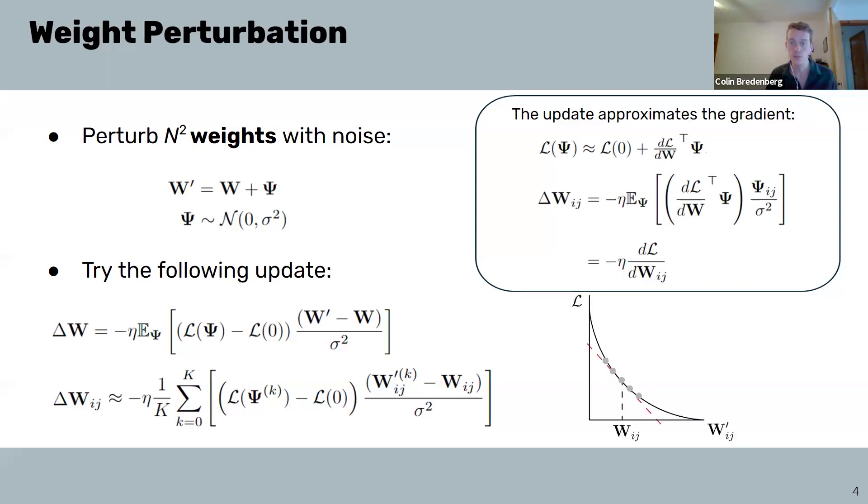Graphically, this parameter update corresponds to the following. We're adding noise to our parameter about the point WIJ, which produces many different losses, these individual dots here. As we can see, by estimating the correlation between the changes in our loss and the changes in our parameter WIJ, we can get an estimate of the slope of our loss function with respect to WIJ. This is exactly what our update is doing.